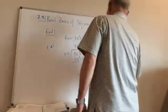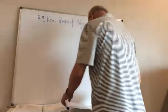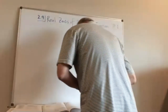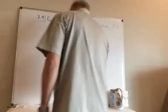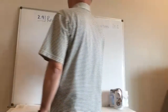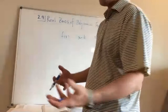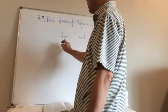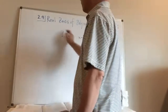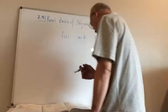Parts c and d you can do on your own — just replace x with -1 and -4. Now, the Factor Theorem: if I have a function and divide by x - k and the remainder is zero, that means x - k is a perfect factor of that polynomial. You can factor the polynomial by x - k with no remainder.